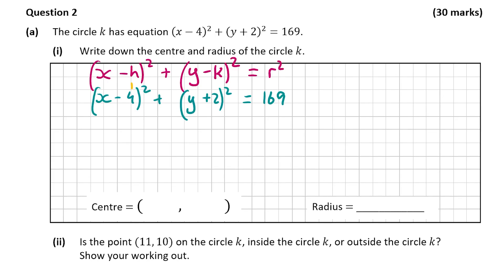We can see that h and 4 are in the same position, that +2 and -k are in the same position, and that r² and 169 are also in the same position. So we can equate all of these: -h = -4, -k = +2, and r² = 169.